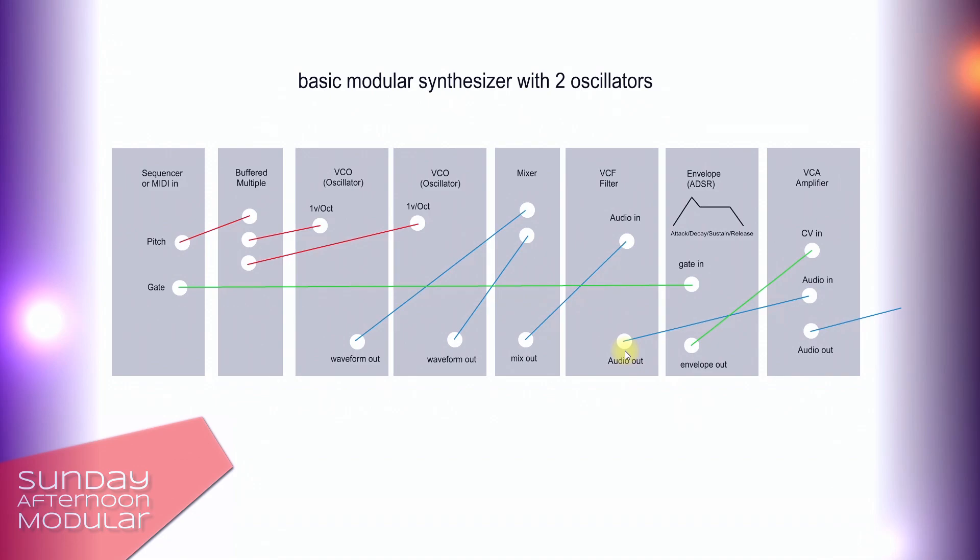Now from the filter we go into the VCA. A VCA is a voltage controlled amplifier. It allows us to amplify the signal while maintaining the relative levels.